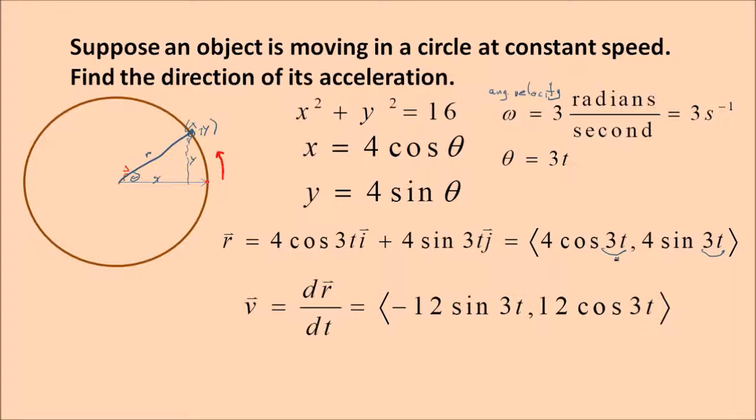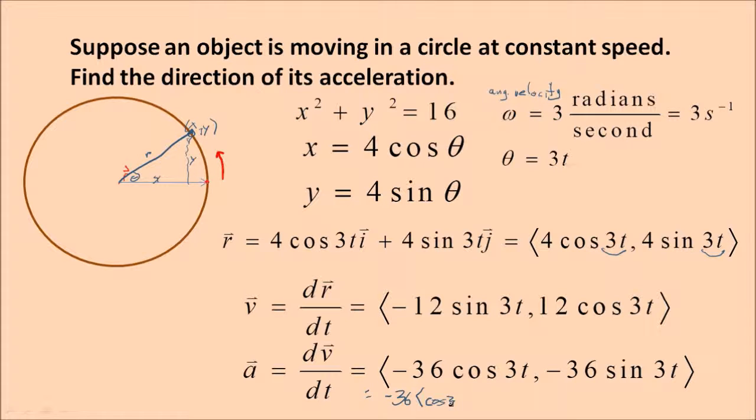Likewise, the acceleration is the derivative of the velocity, dv/dt. So again, using the chain rule, we get -36cos(3t) - 36sin(3t). Or another way of looking at it is -36 times the unit vector, which would be cos(3t), sin(3t). Notice everything's back to positive inside the diamond brackets, but the magnitude out there is negative.